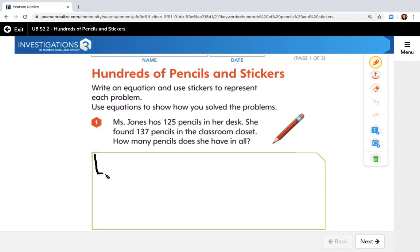We know that 100 can be represented by a flat. We know that 20 can be represented with two rods. And we know that 5 can be represented with 5 units or 5 cubes. So we have 125. And she's going to add 137 to that.